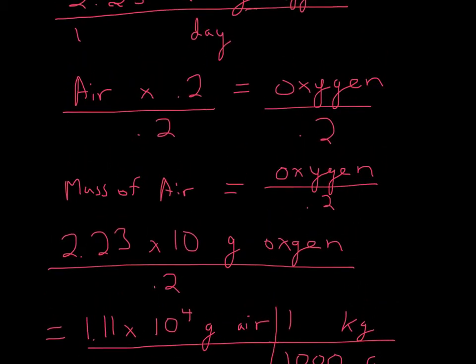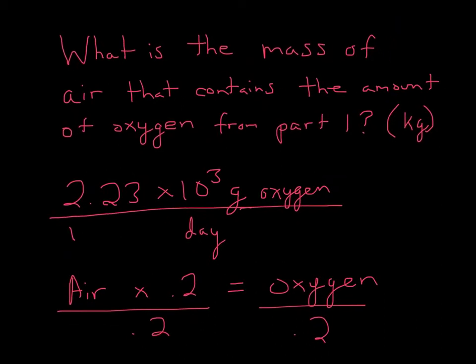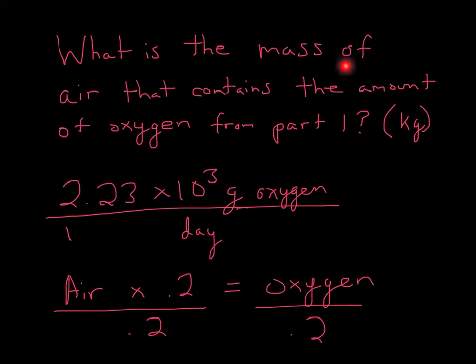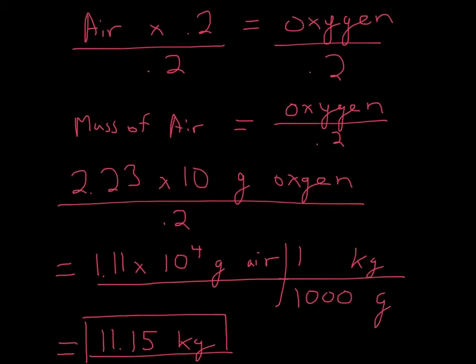It looks like we're almost done. Let me go back to the question, and it says: what is the mass of air that contains the amount of oxygen from part 1? So far we do have that. We got the mass of air. But the most critical thing is kilograms. We have it in grams.